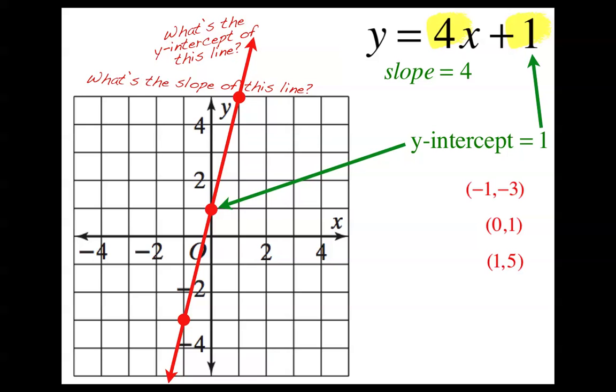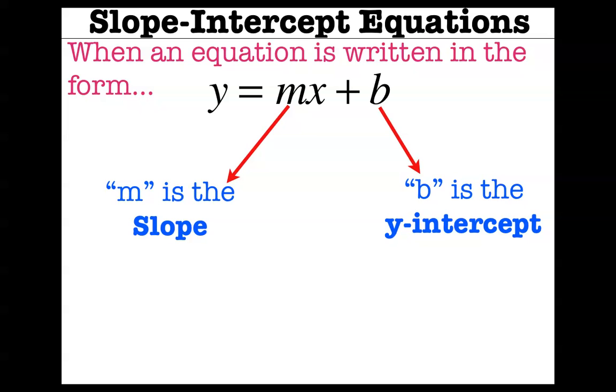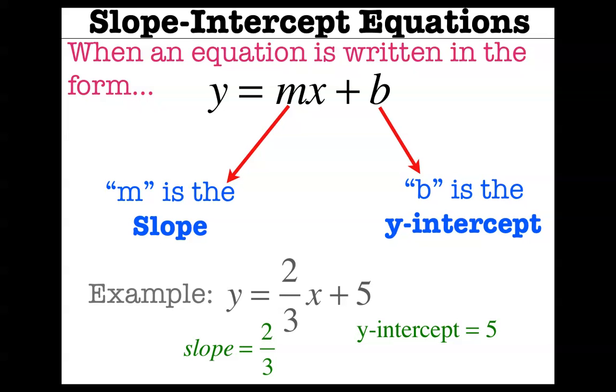And this is what we call slope-intercept form, or a slope-intercept equation. When an equation is written in the form y equals mx plus b, whatever the number is in that m spot is going to tell you the slope of the line. And whatever the number is in the b spot is going to be the y-intercept of the line. That's really convenient, because then you can just look in an equation and tell really quickly what the slope and the y-intercept are. And you don't have to make a big table to find out what the line looks like. So here's an example. If you had y equals two-thirds x plus five, the slope is two-thirds, and the y-intercept is five.